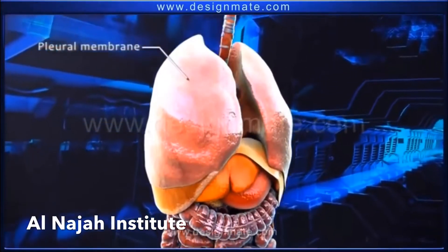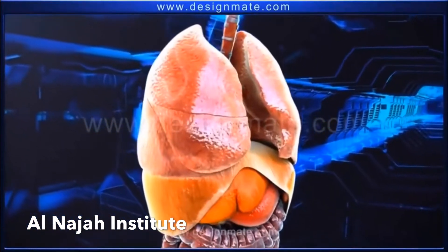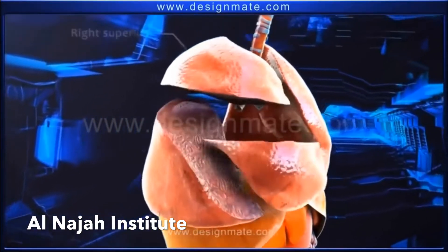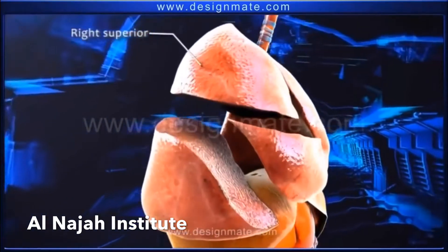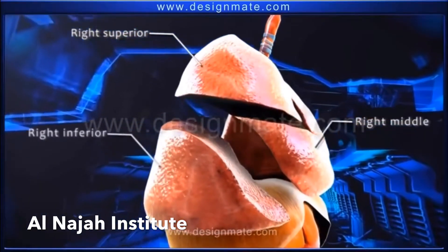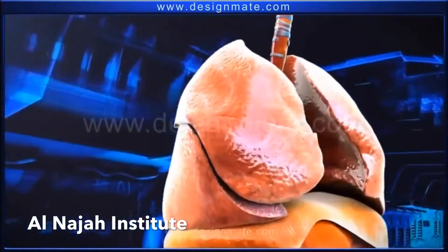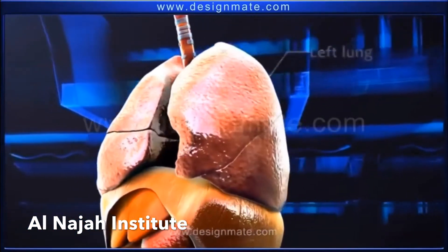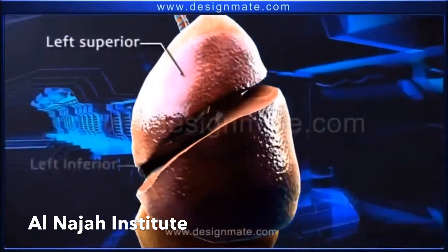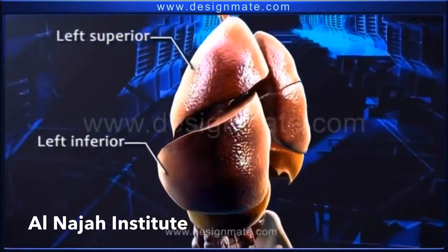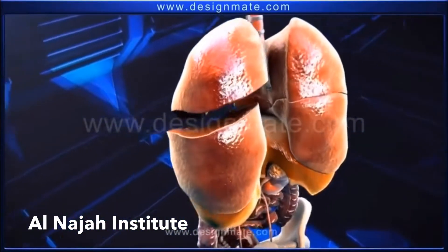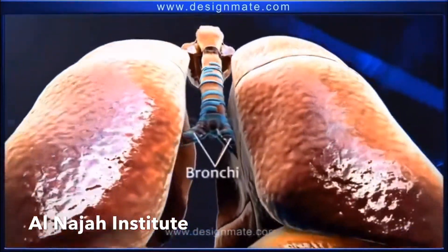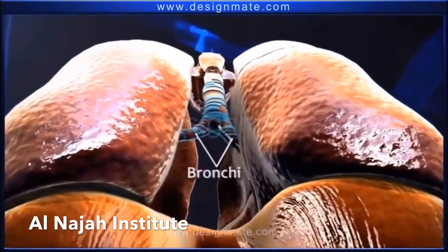Present within the ribcage are the pleural membranes which enclose the lungs. The right lung is divided into three lobes: the right superior, right middle, and the right inferior lobe. The left lung is smaller and has only two lobes: the left superior and the left inferior lobe. Both lungs are associated externally with small tubular bronchi which unite and extend into the trachea.